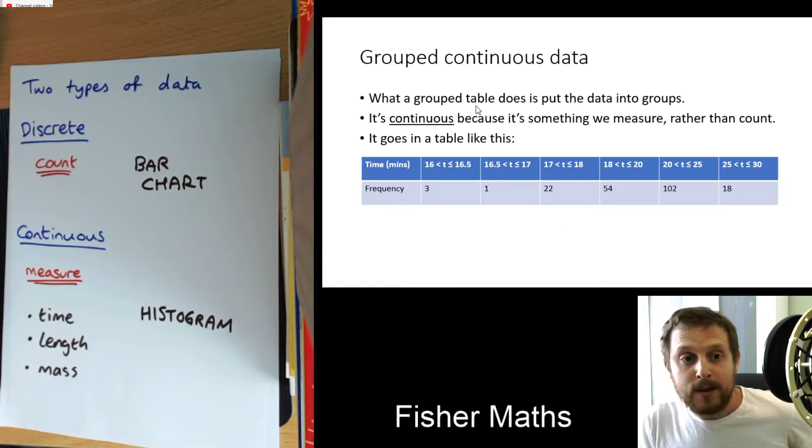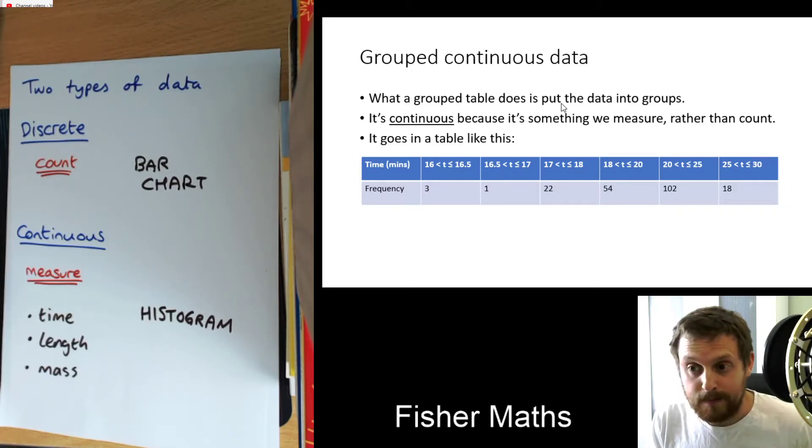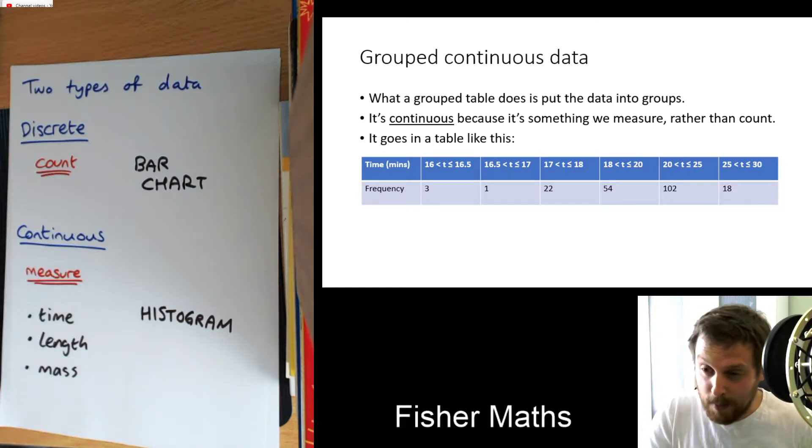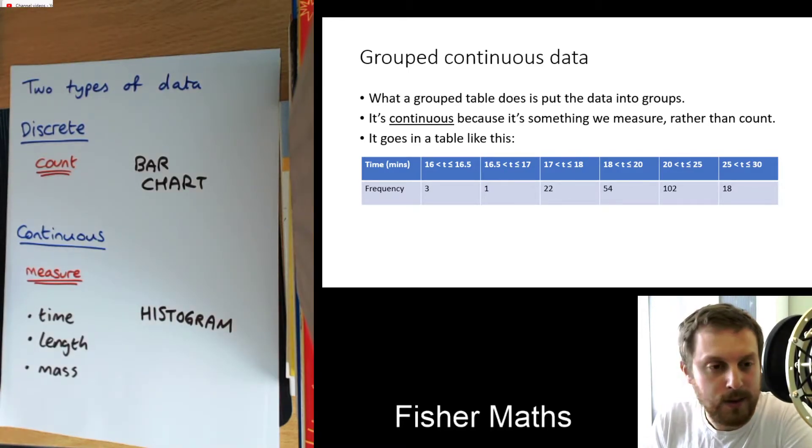So what a group table does is it puts the data into groups. It's continuous because we're measuring it. Like we're, it's something that we measure. It was time. We can have grouped discrete data. But this is grouped continuous data that we're talking about at the moment. And then it goes into a table that's going to look a little bit like this, right? So in our exact situation, it's time. And so I'm using the letter T to represent the time in minutes. And these are the groups.